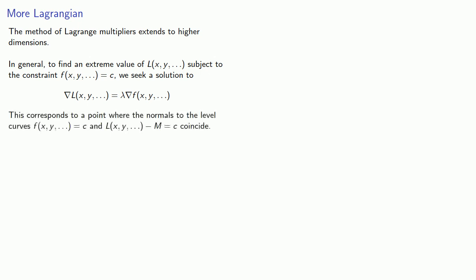The method of Lagrange multipliers extends to higher dimensions. In general, to find an extreme value of some objective function subject to the constraint, we seek a solution to the gradient of the objective equals lambda times the gradient of our constraint. And remember, the geometric significance here is that any solution corresponds to a point where the normals to the level curve corresponding to the constraint and the level curve corresponding to a specific value of our objective function coincide. We'd say they are coincident, but this sounds like it's accidental, whereas we're very much trying to make this happen. And it's also worth mentioning that we could also solve lambda gradient of the objective equals the gradient of the constraint. It doesn't matter which side the lambda is on.